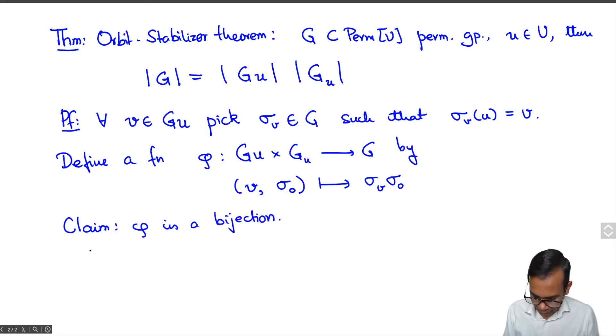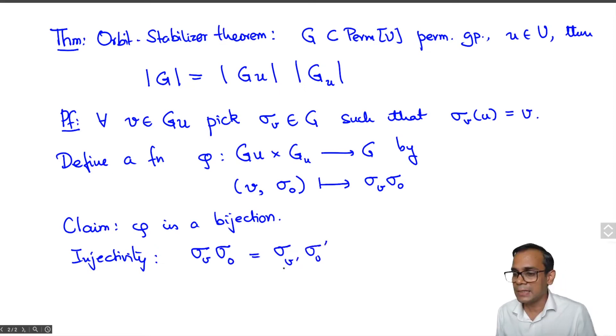So firstly, let us check injectivity. So suppose we have that sigma V sigma 0 is equal to sigma V prime sigma 0 prime. Then we need to show that V is equal to V prime and sigma 0 is equal to sigma 0 prime.